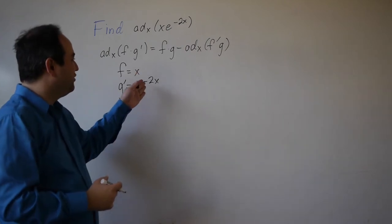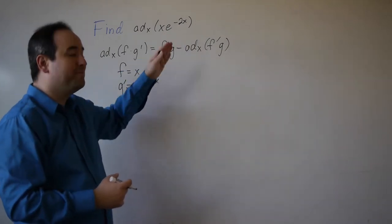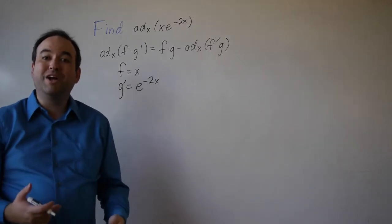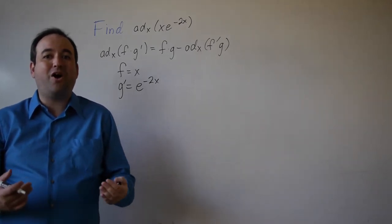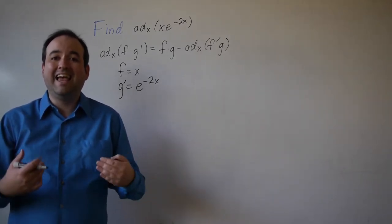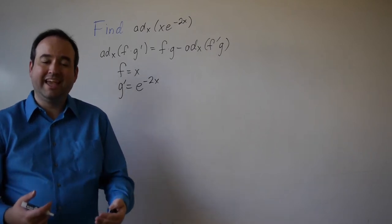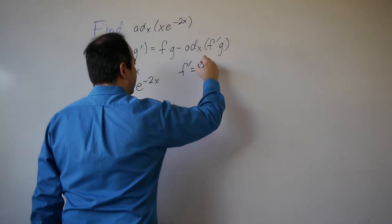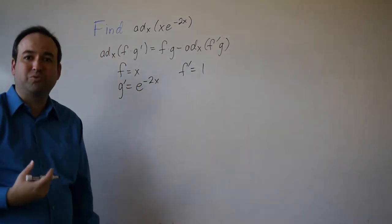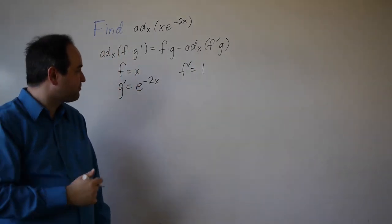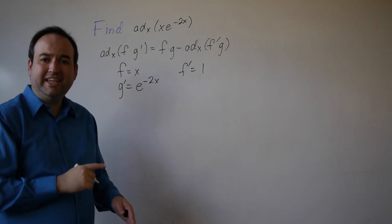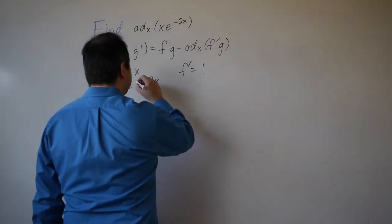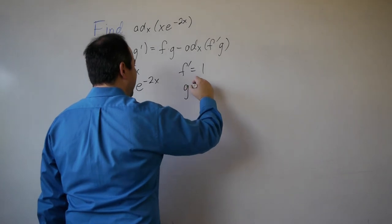When I multiply these two back together, I return my original integrand. Once we know f and g prime, all we do is calculate f prime and g. To calculate f prime from f, we differentiate. The derivative of x is just 1. To find g given g prime, we anti-differentiate.